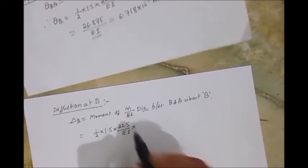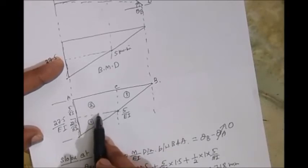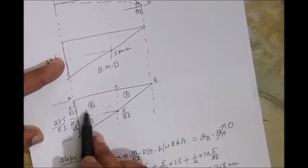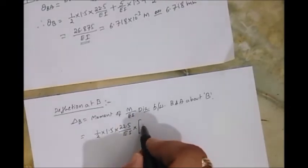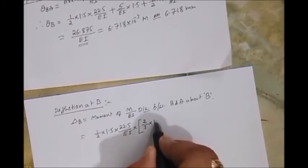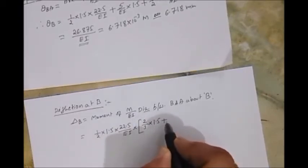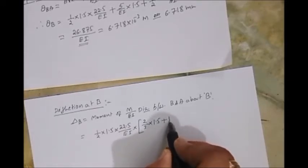CG lies from the apex for triangle. From the apex it's two-third of L, so from this it's one-third of L. From the apex we need to take, so it is two-third of L is 1.5 plus distance. The remaining distance is one meter.